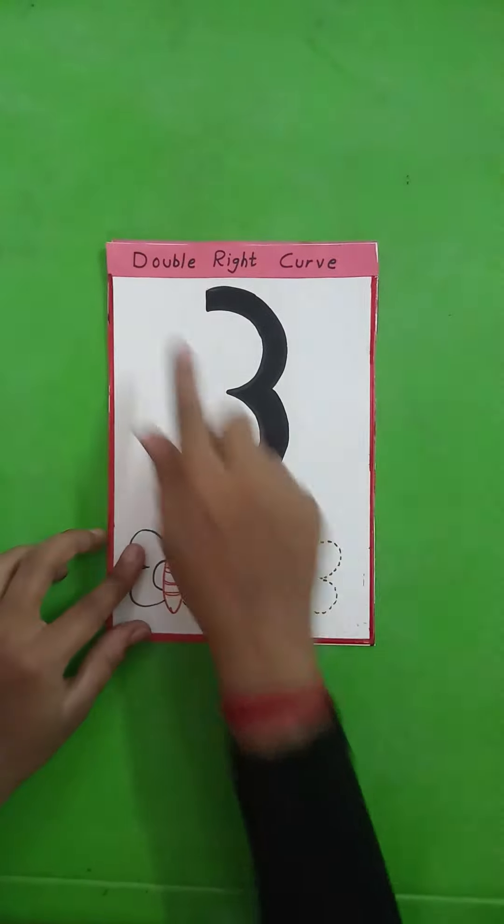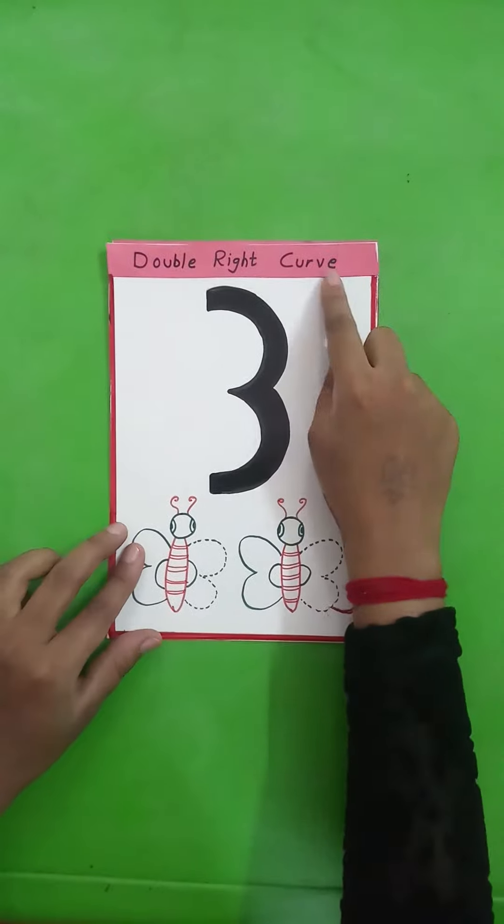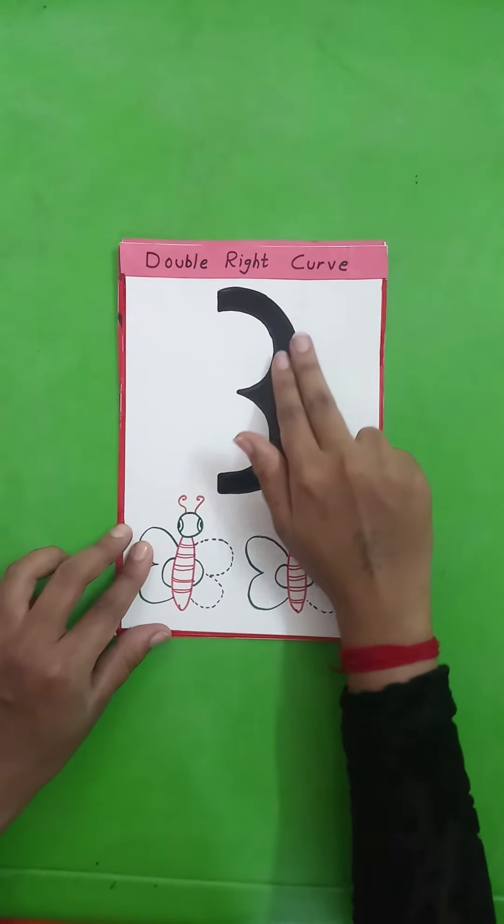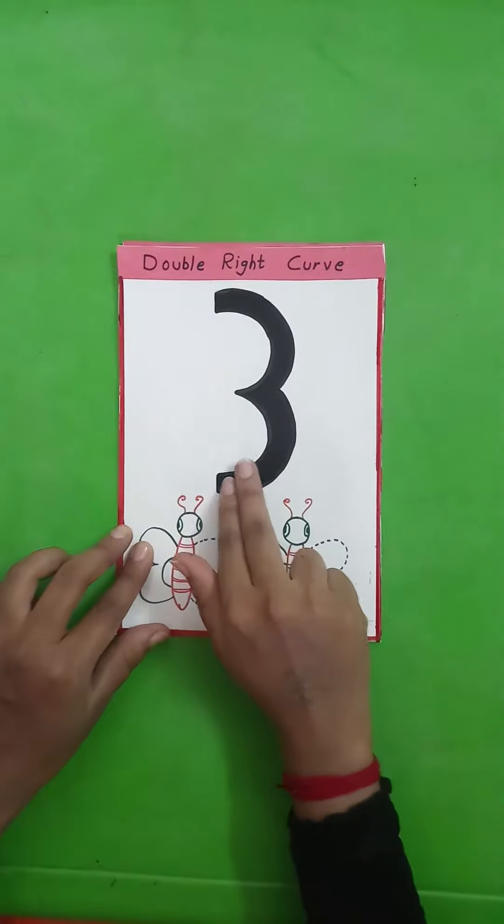Double right curve. We have to make two right curves. First one and then second one.